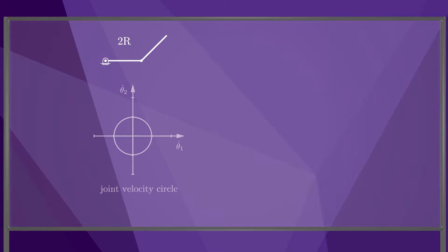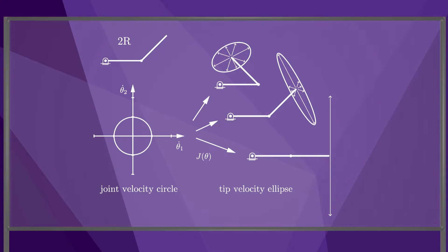A robot configuration is either singular or it's not. But even if a configuration is non-singular, it still may be close to being singular. The manipulability ellipsoid we saw in the first video of this chapter is one way to visualize how close a robot is to being singular. For this 2R robot, a circle of velocities in the joint space maps through the Jacobian to an ellipse of velocities at the tip of the robot, depending on the robot's configuration.